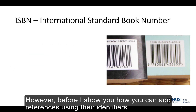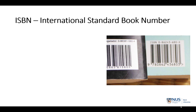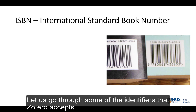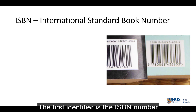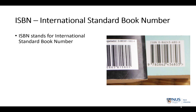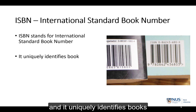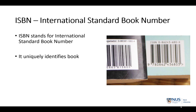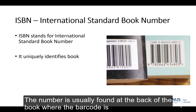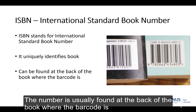However, before I show you how you can add references using their identifiers, let us go through some of the identifiers that Zotero accepts. The first identifier is the ISBN number. ISBN stands for International Standard Book Number and it uniquely identifies books. The number is usually found at the back of the book where the barcode is.